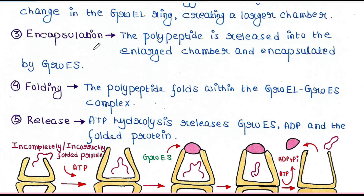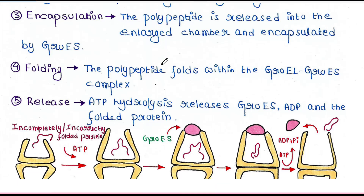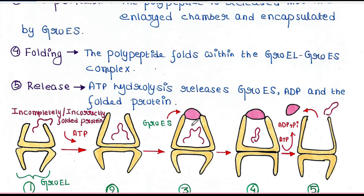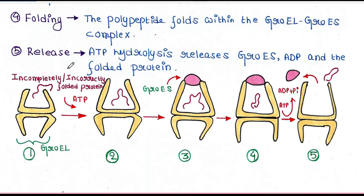Next is encapsulation. The polypeptide is released into the enlarged chamber and encapsulated by GroES. Here the GroES properly fits over the top and the system is closed. Next is folding — the polypeptide folds within the GroEL-GroES complex.